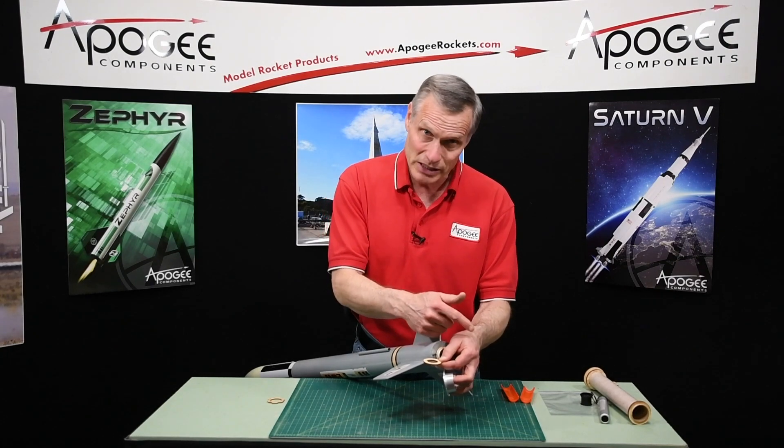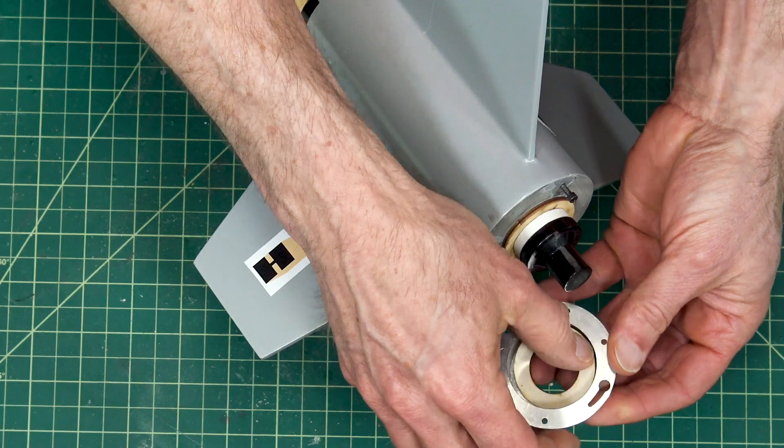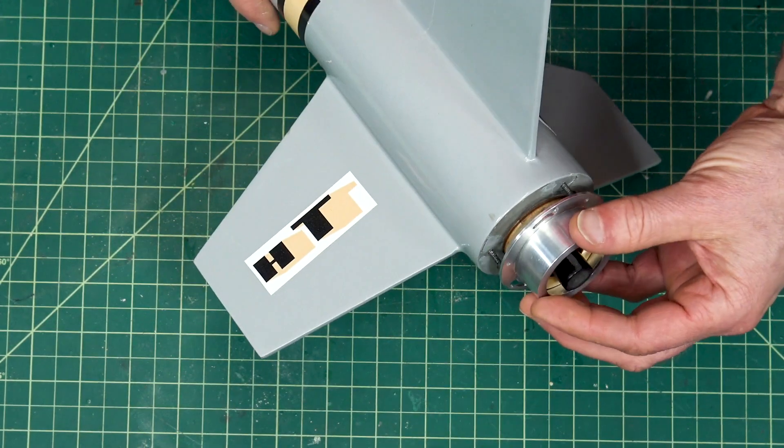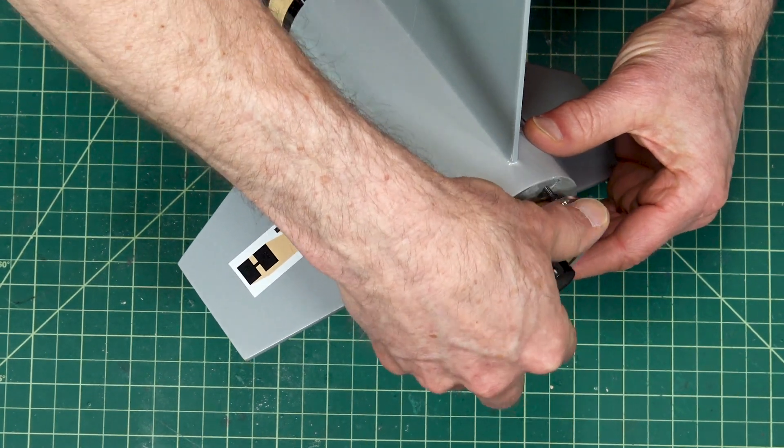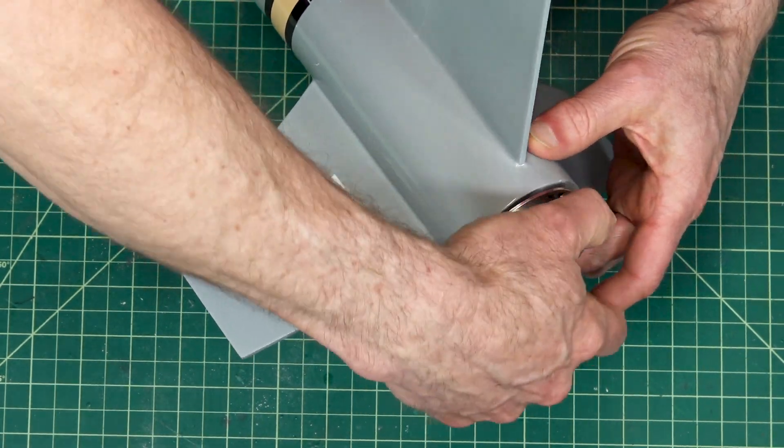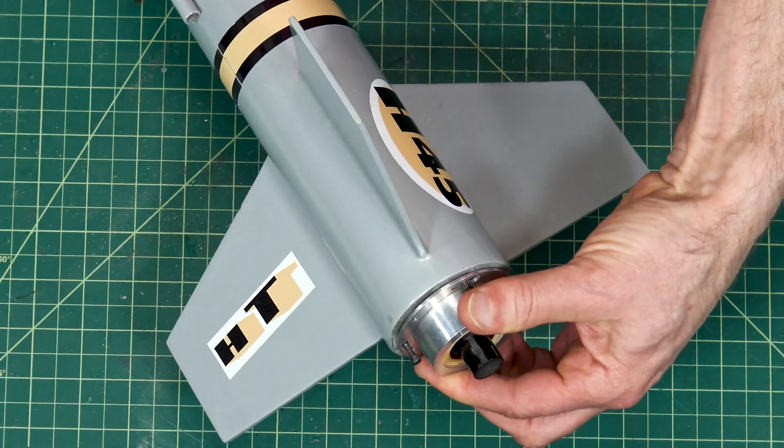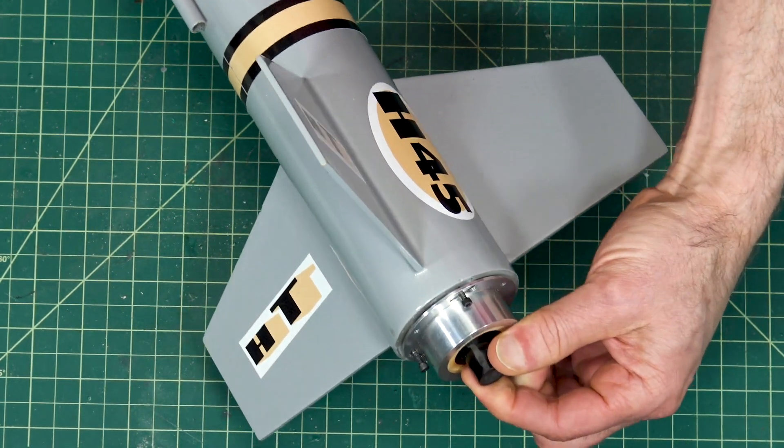And then when you put this on your rocket just like that, when you give it a little twist, that locks it down. And again, that's locked in place.